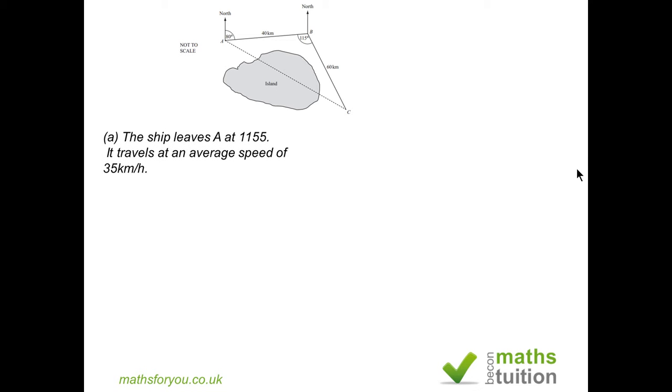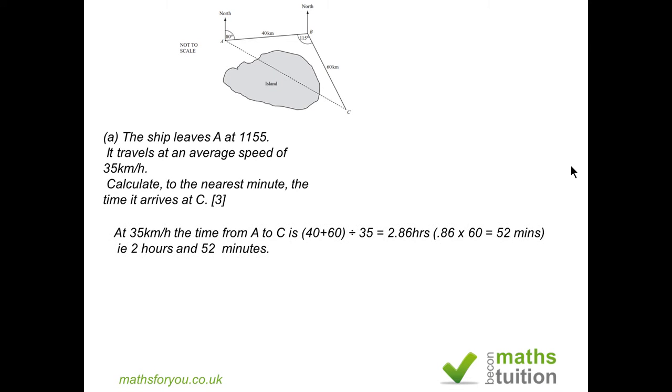From the outset, the ship leaves at 1155 hours and it travels from A to B, which is 40 km, and from B to C, which is 60 km, and together they form 100 km. If you remember from your earlier lessons on distance, speed, and time, to get time you divide distance by the speed. This time the distance is 100, 40 plus 60, divided by the speed 35 km an hour, and you end up with 2.86 hours.